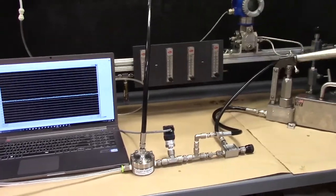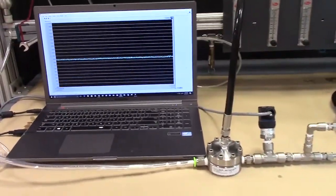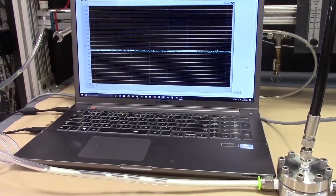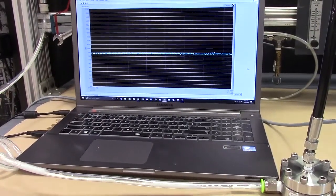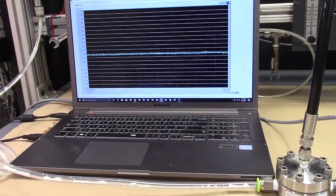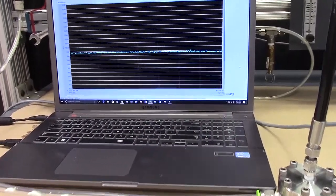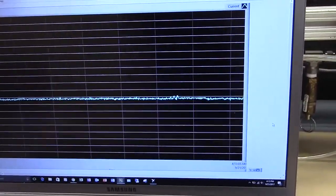So here we have the Equilibar back pressure regulator. I'm flowing at around three liters a minute of nitrogen and I introduce three pulses of liquid to the system. Interestingly enough we don't see any inlet pressure change as a function of the introduction of liquid and we see the mixed phase fluid evolve through the regulator without any disturbance to the inlet pressure.